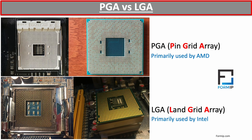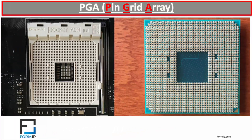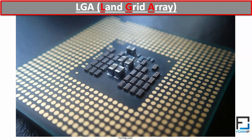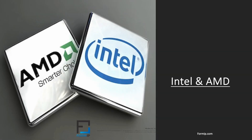We also have the LGA, land grid array, which is mainly used by Intel and is newer than the PGA design. The LGA socket is a metal case with a door that closes on the CPU and locks with a lever. Unlike PGA formats which have holes, the LGA socket has pins that make contact with the CPU. LGA-compatible processors do not have pins, but pads resting on the pins of the LGA socket. For the CompTIA A+ exam, you will need to know some characteristics of several socket types, classified by two major brands: Intel and AMD.